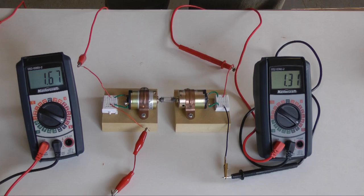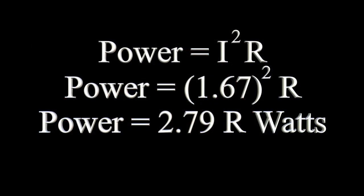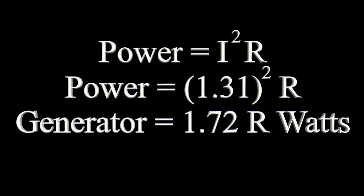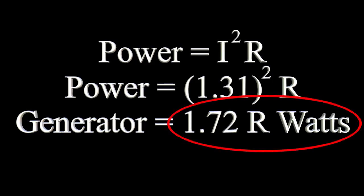Here is the I squared times R calculation. I don't have a value for R, so I left it as a variable. On the motor side, the system consumed 2.79 times R watts. While on the generator side, the system produced 1.72 times R watts.